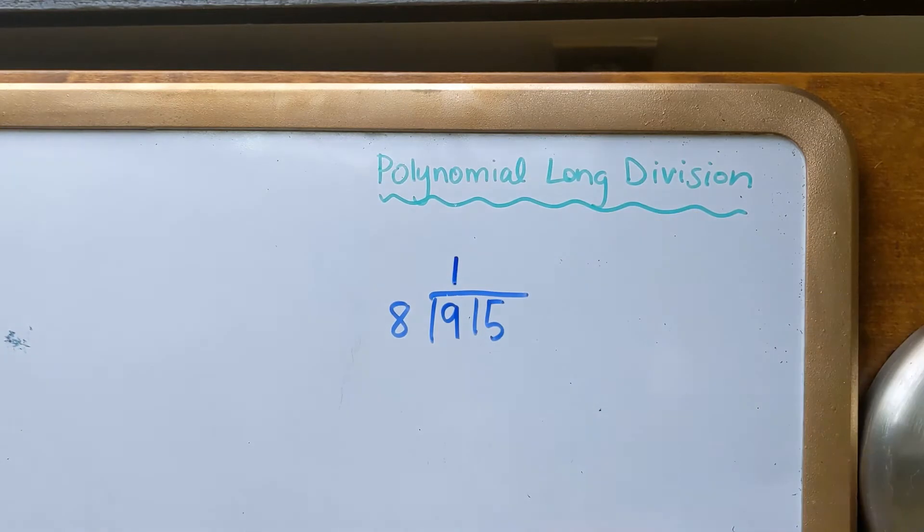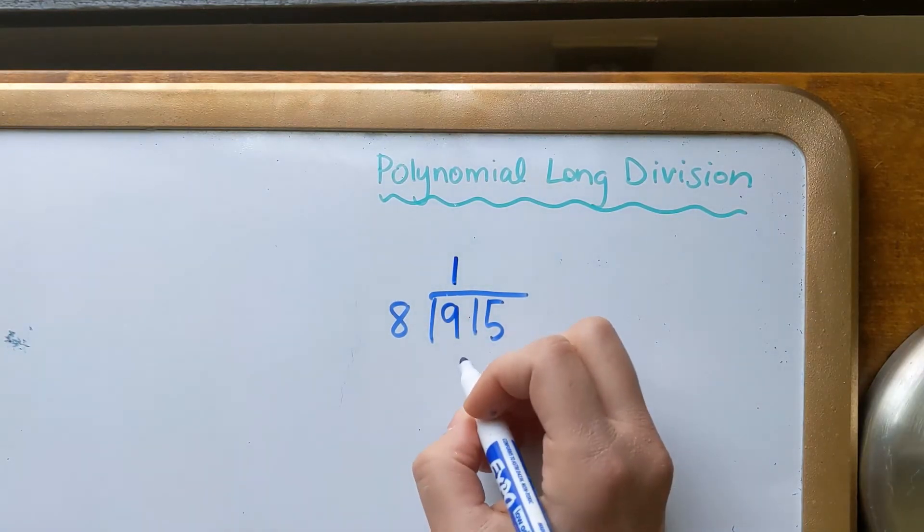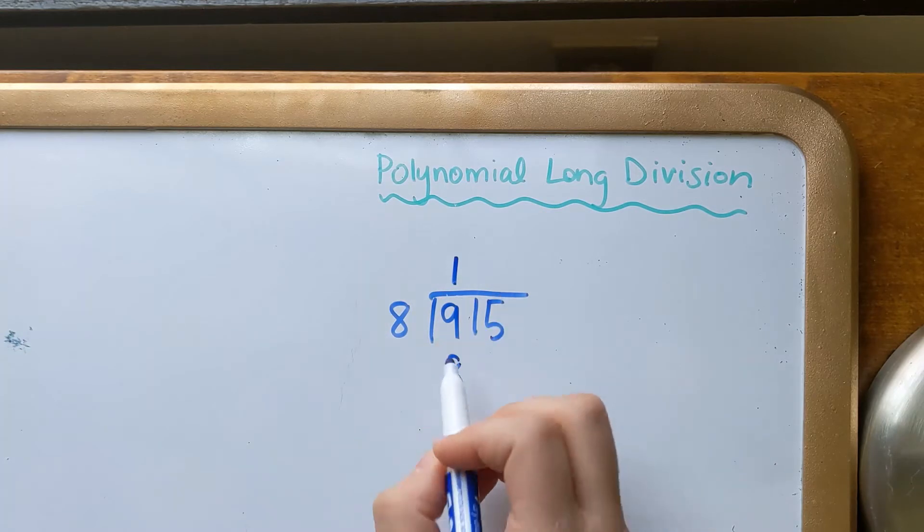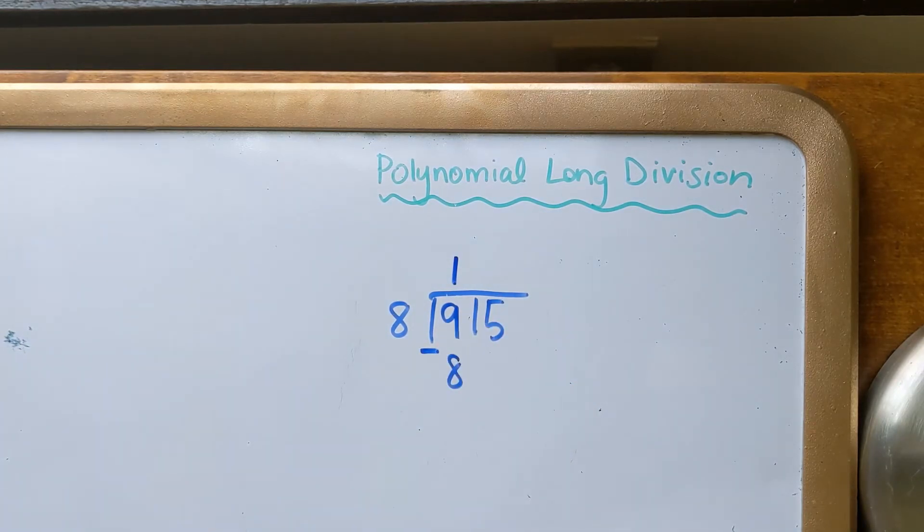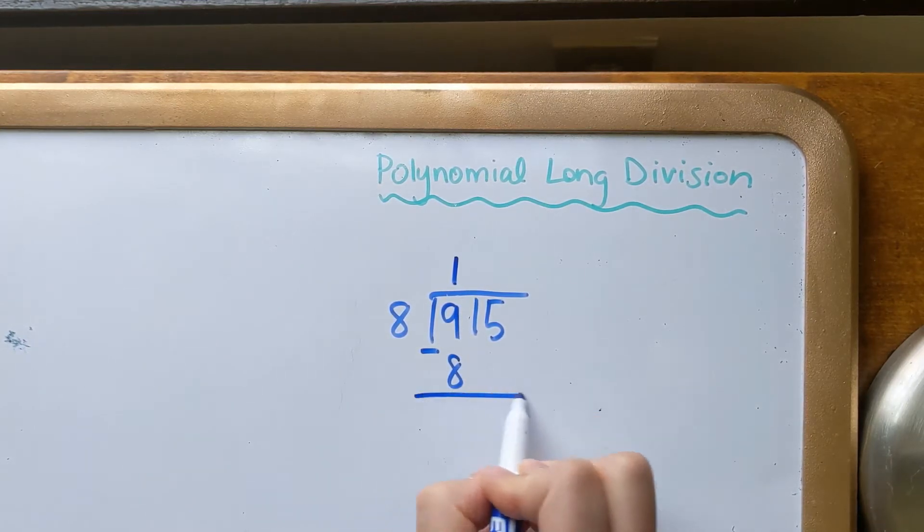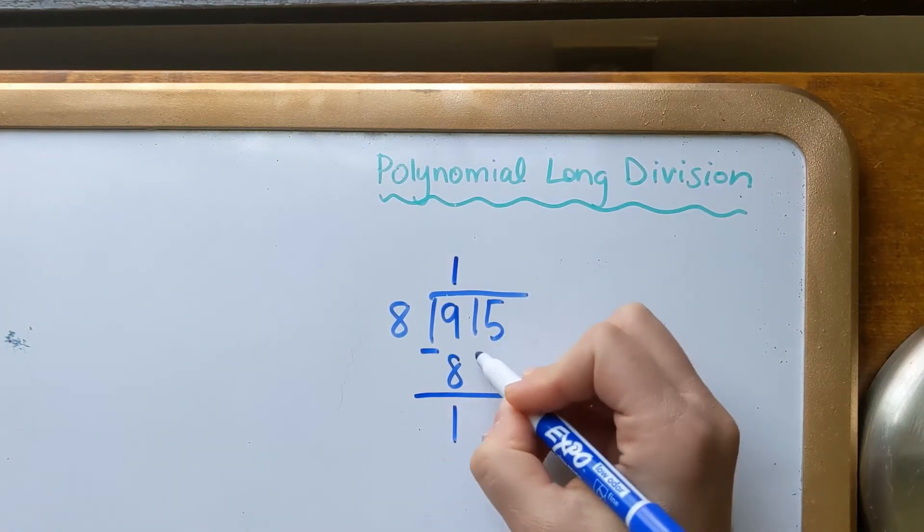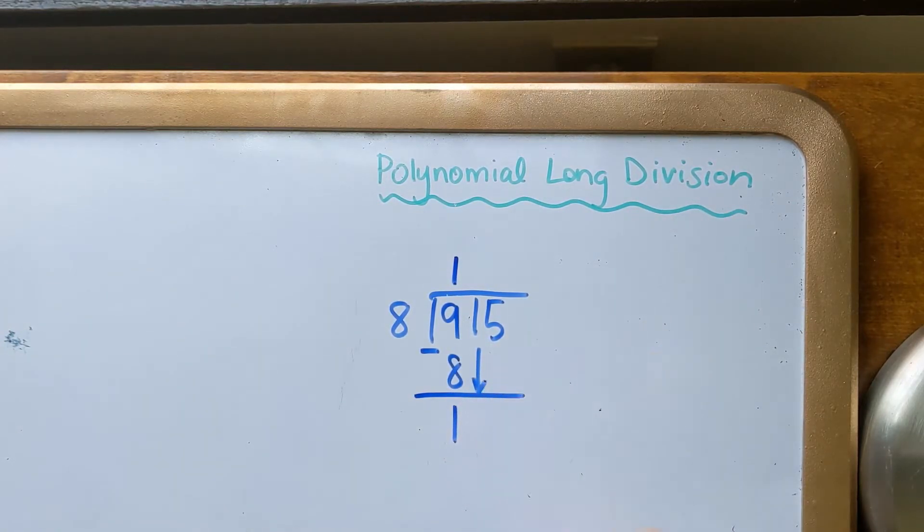8 times 1 is closest without going over to 9, and then what you do is subtract it. Now this is an easy step when we're doing the elementary school way, but it's something very important to remember when we're doing polynomial, and you'll see why. So you subtract it, 9 minus 8 is 1, and I want to drop the next one down, so I would be looking at the number 11.